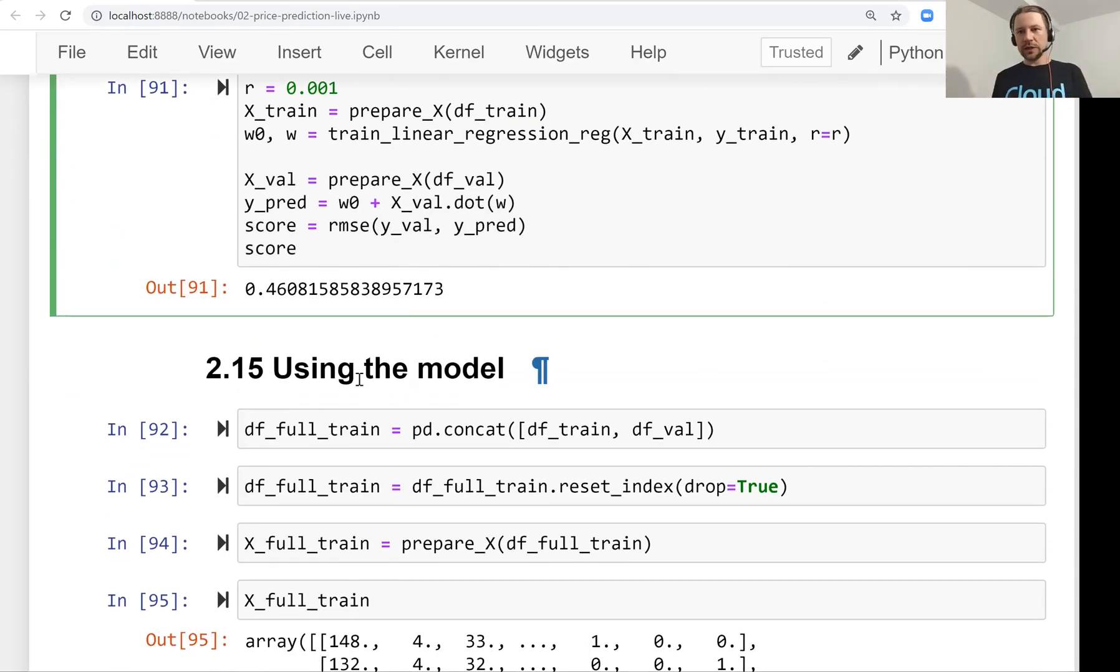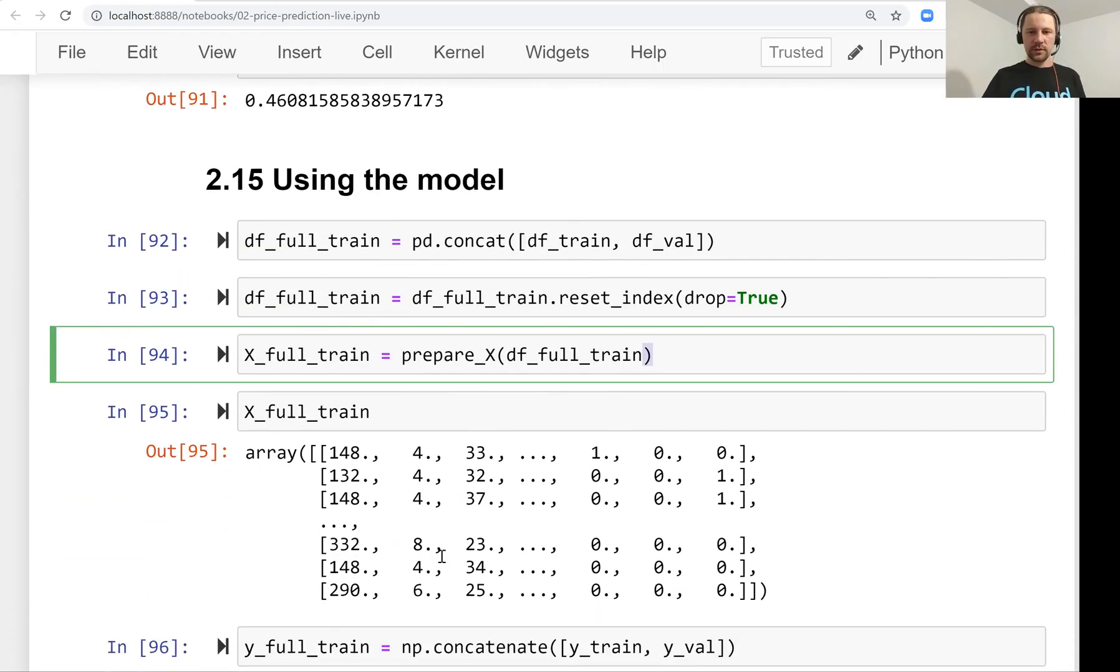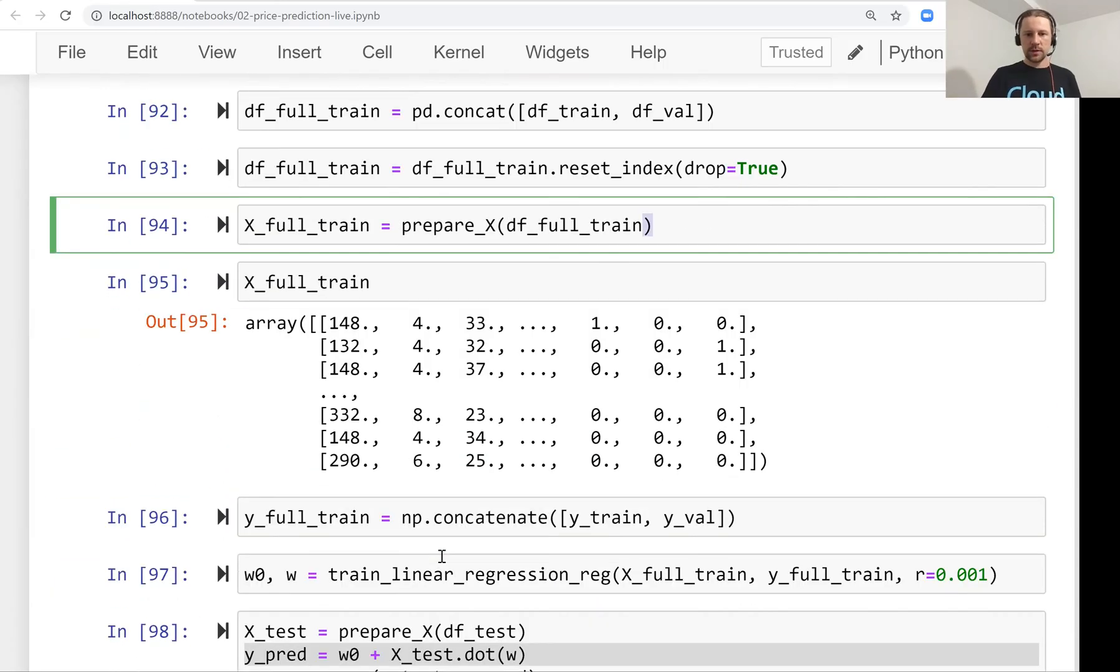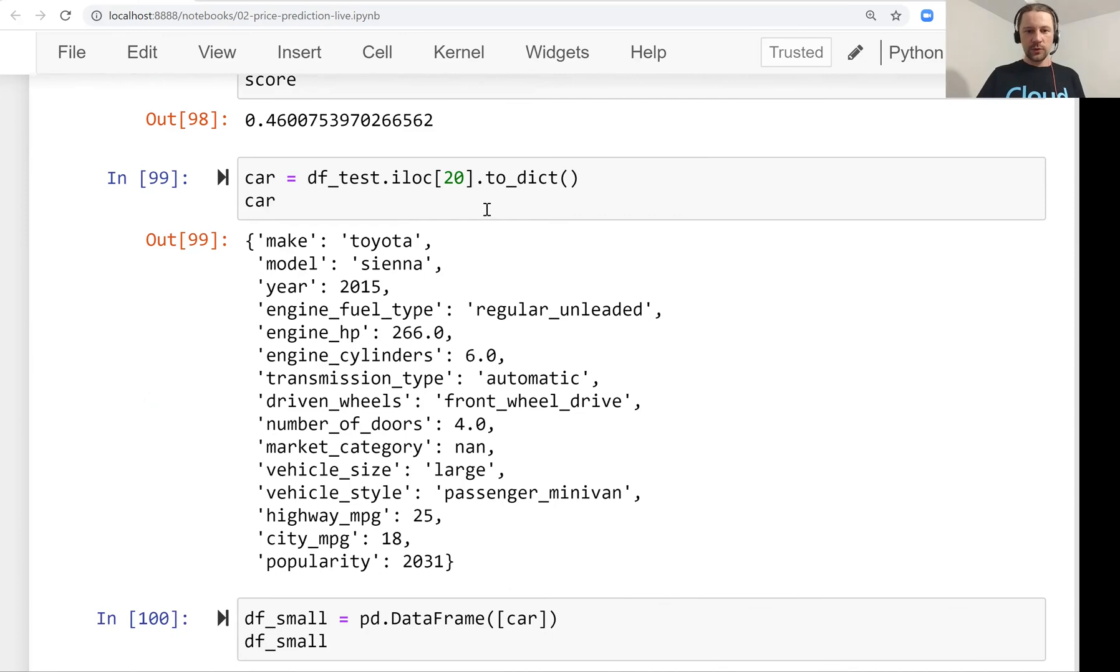Then we trained our final model. We combined the training and validation dataset into one full train dataset, and we again used this prepare X function that is very convenient. We trained our final model and we also saw how to apply this model to a car for which we don't know the price. Well, actually we know because this is the test dataset, but we pretend that we don't know the price for this car. We predicted the price which wasn't that off from the actual price.